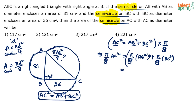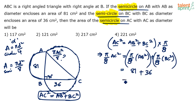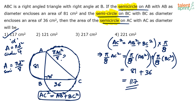So the area of the semicircle on AC equals the area of the semicircle with AB as diameter, which is 81, plus the area of the semicircle with BC as diameter, which is 36. That gives us 81 plus 36 equals 117 centimeter squared. So option 1, 117 centimeter squared, is the answer. It's all about applying the Pythagorean theorem and multiplying by π/8 because we are considering semicircles.